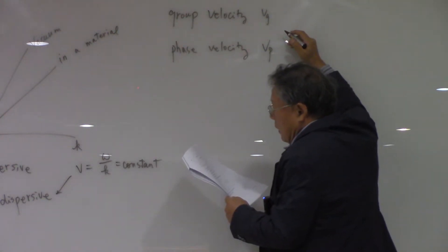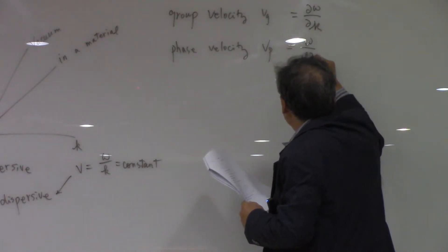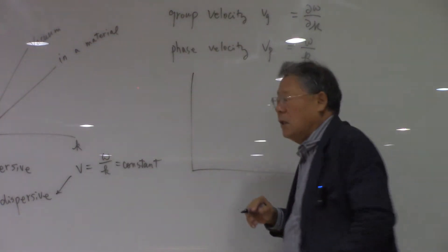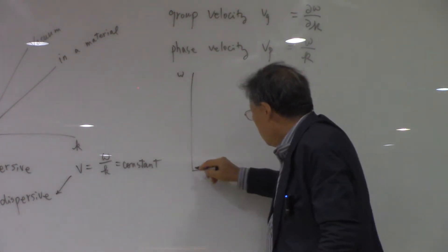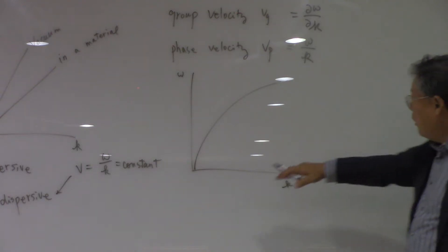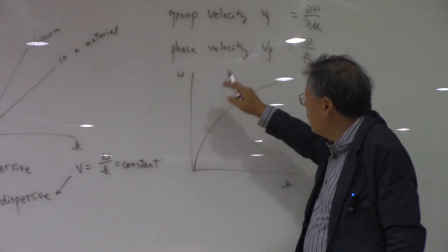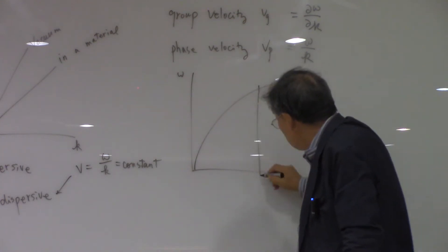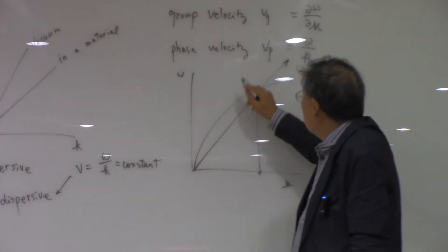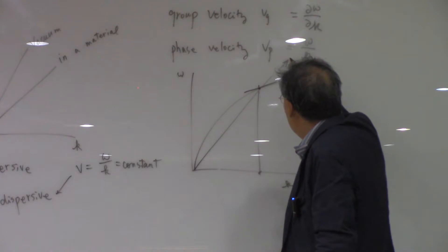The group velocity is ∂ω/∂k, while the phase velocity is simply ω/k. If you have a non-dispersive system where omega versus k is not a straight line — some kind of curve — then the phase velocity and group velocity are different. At a given k value, the phase velocity is the slope from the origin, while the group velocity is the local slope of the curve at that point.